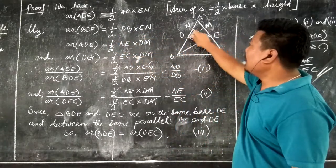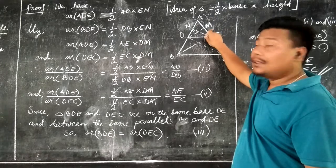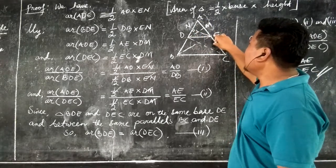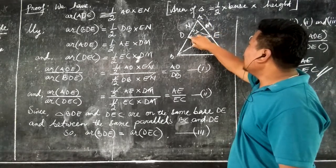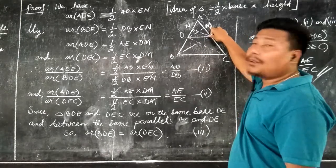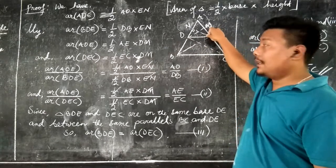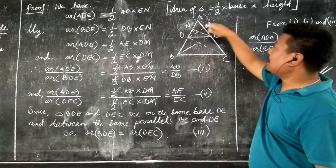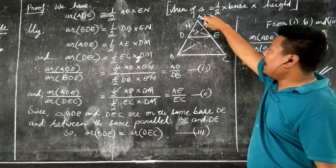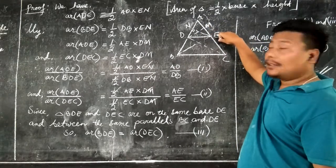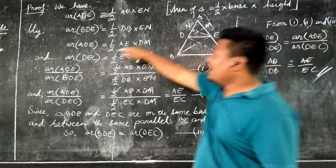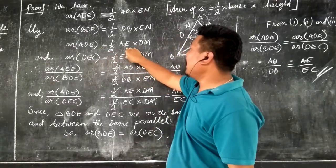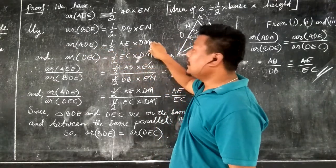Since we have two perpendicular lines, in area of triangle ADE, DM is also a height and AE becomes the base. So area of triangle ADE is equal to half into AE into DM.